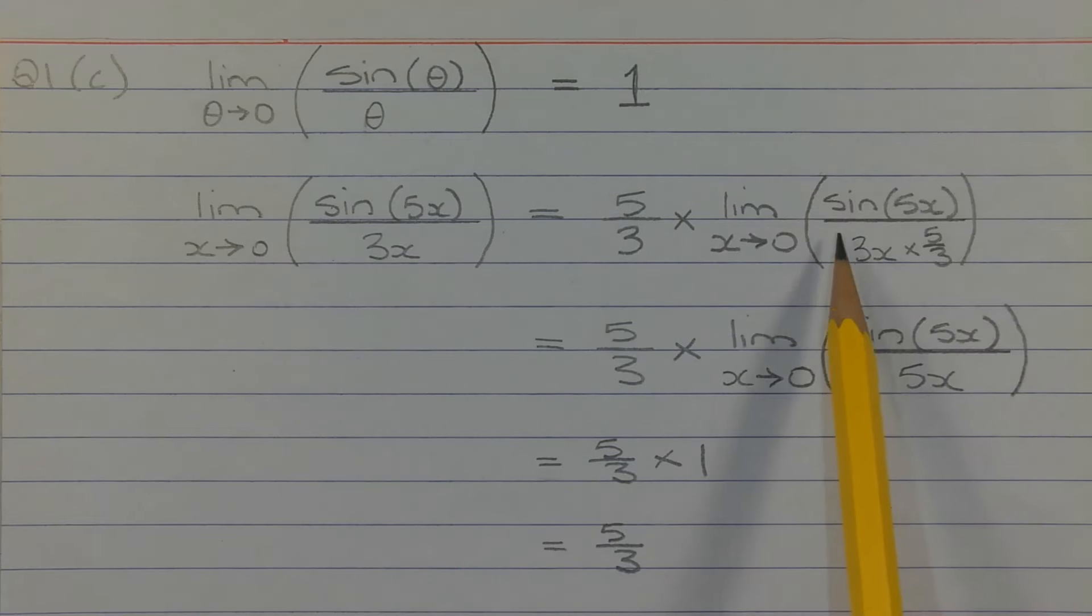So by multiplying the denominator by 5 over 3, we've actually made the fraction smaller by 3 fifths. But we compensate for that by multiplying by the reciprocal of 3 fifths, which is 5 over 3.